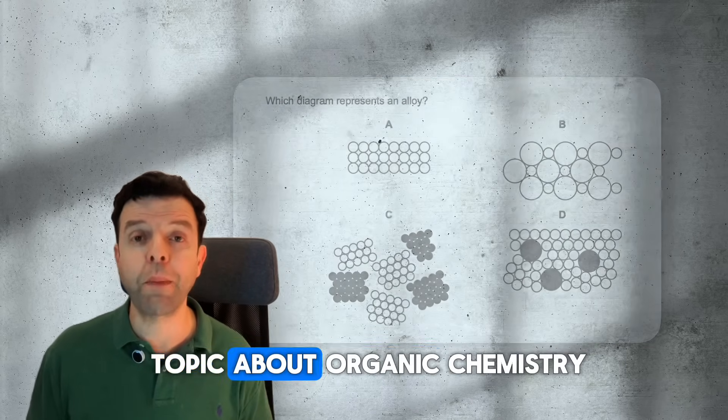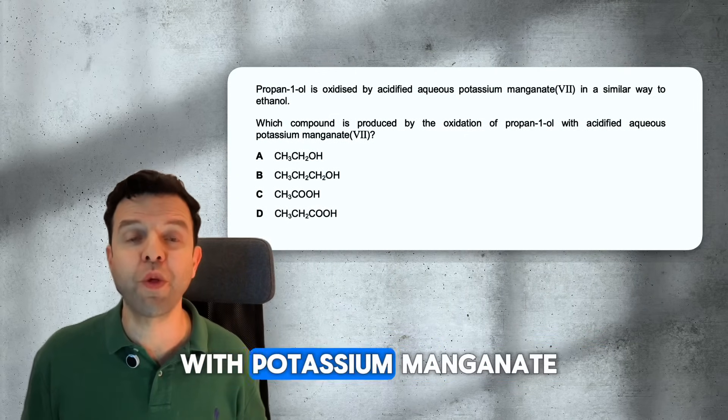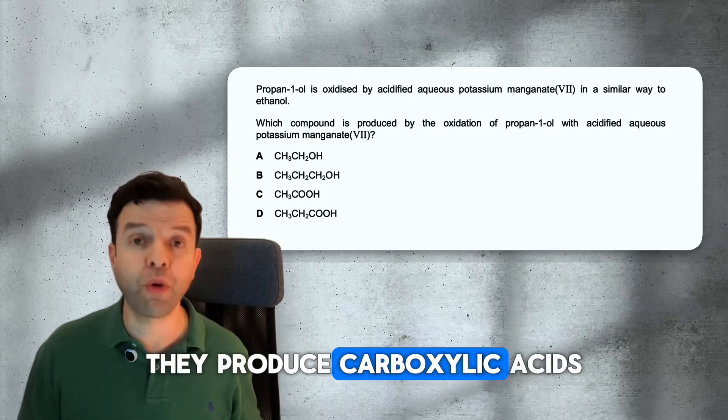Moving to the last topic about organic chemistry. When alcohols are oxidized with potassium manganate, they produce carboxylic acids.